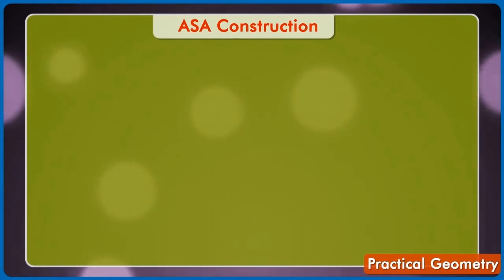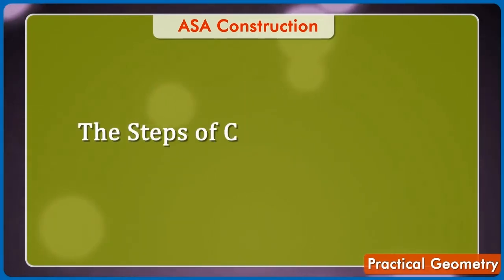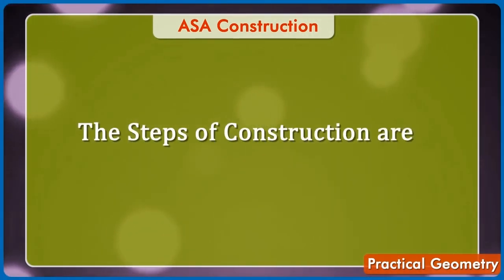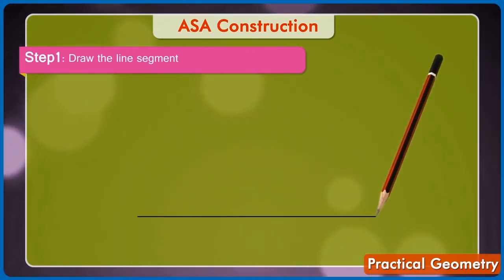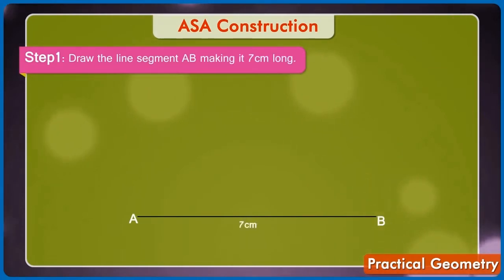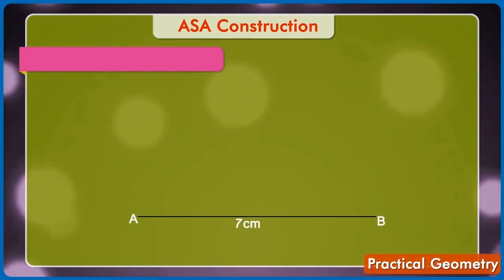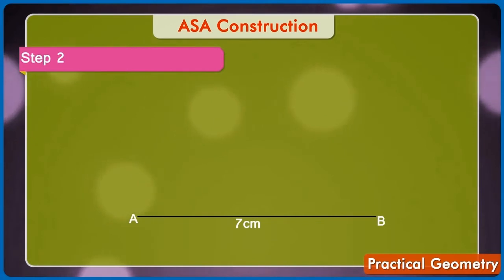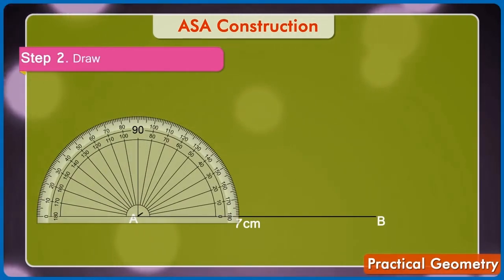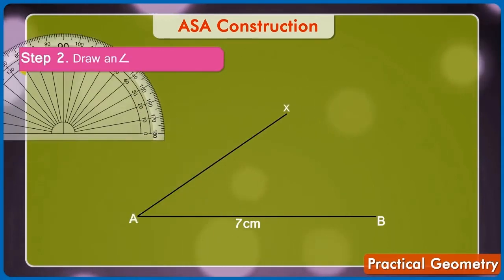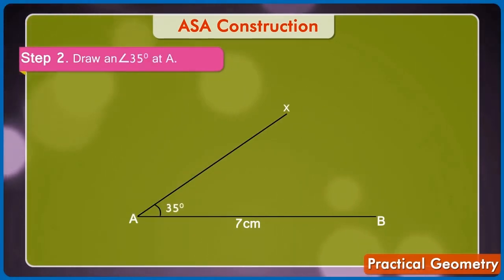Solution. The steps of construction are: Step 1: Draw the line segment AB making it 7 cm long. Step 2: By using a protractor, draw an angle BAX of 35 degrees at A.